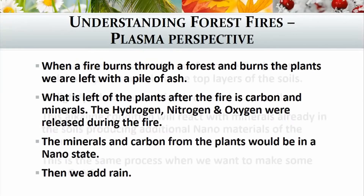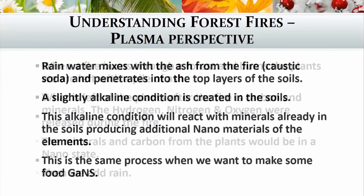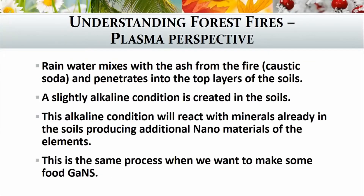Then we add the rainwater. Your rainwater is going to mix with the ash from the fire, and as we know, you can use ash from a fire as your caustic soda. This penetrates into the top layers of your soils with the rain, creating a slightly alkaline condition in your top layers of soil. This alkaline condition will react with minerals already in your soil, producing additional nanomaterials of your elements. This is the same process we use to make food GANSes — we have to create the nanomaterials before we can make a GANS of it, and this is what nature is doing here, creating nanomaterials through the alkaline condition first.